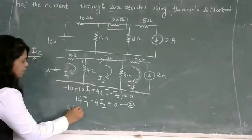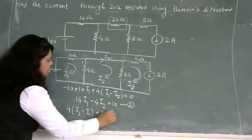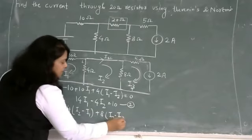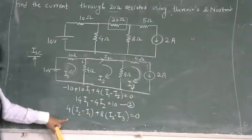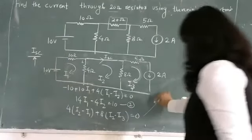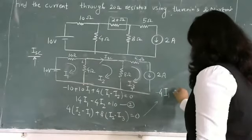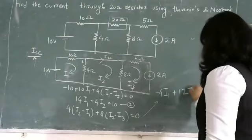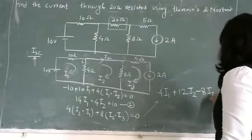4i2 minus i1 plus 8i2 minus i3 is equal to 0. So minus 4i1 plus 8 plus 4, 12i2 minus 8i3 is equal to 0.